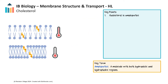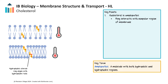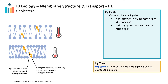Cholesterol is a critical modulator of membrane fluidity in animal cells. Positioned between the fatty acid tails of phospholipids in the bilayer, the amphipathic nature of cholesterol allows the molecule to interact with both the hydrophobic and hydrophilic portions of the membrane. The hydrophobic steroid ring structure of cholesterol aligns with the hydrophobic tails of the phospholipids in the interior of the bilayer, while the polar hydroxyl group at the cholesterol's head is positioned towards the hydrophilic surface of the membrane.